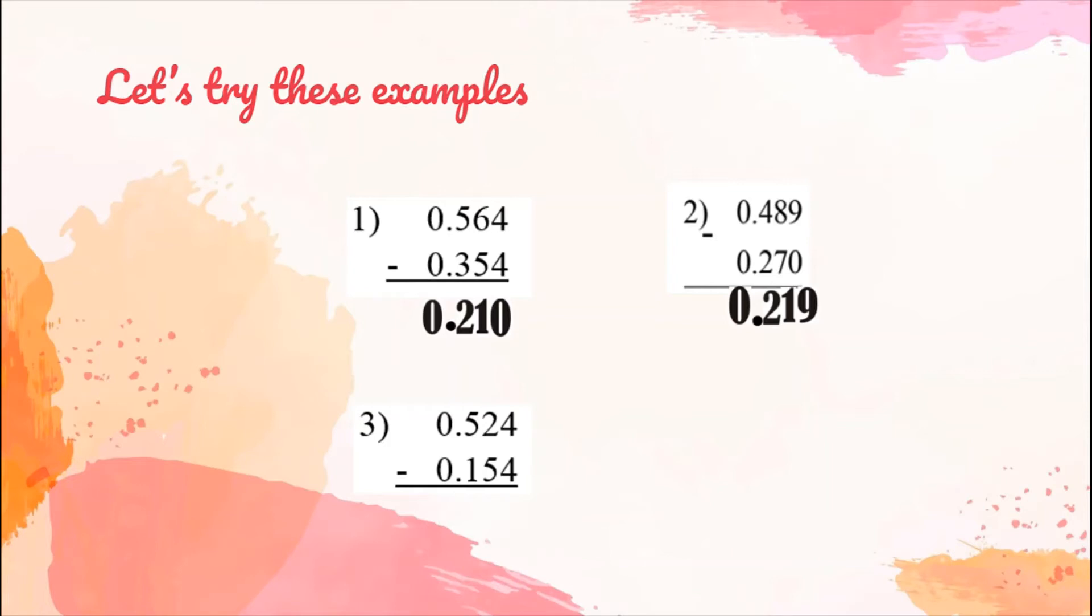So it's very easy, right? It's just like we are adding whole numbers but the only difference is we have the decimal point. Now let's continue with number 3. We have 0.524 subtracted by 0.154. 4 minus 4, we have 0, we have 2 minus 5.